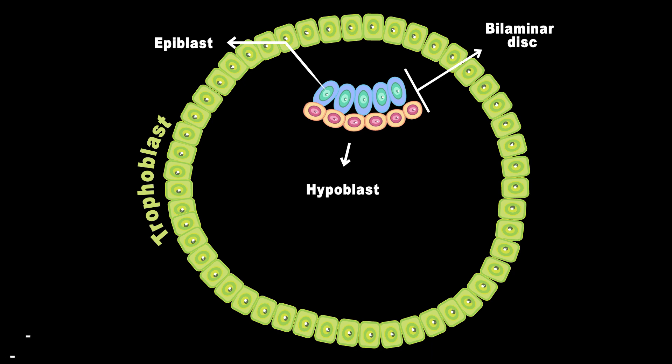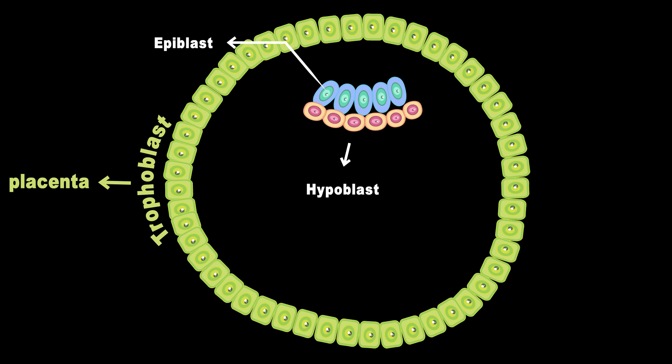These extraembryonic tissues are essential to provide nourishment, gas exchange, physical protection, waste removal, and hormonal regulation. The trophoblasts differentiate and give rise to two different cell types which become placenta in the future. After the bilaminar disc is created, three extraembryonic tissues form during early development.